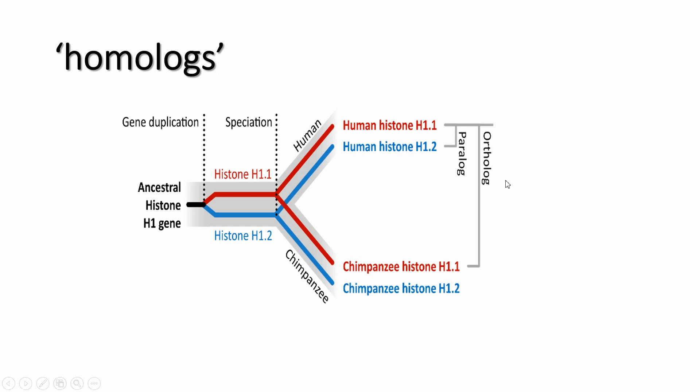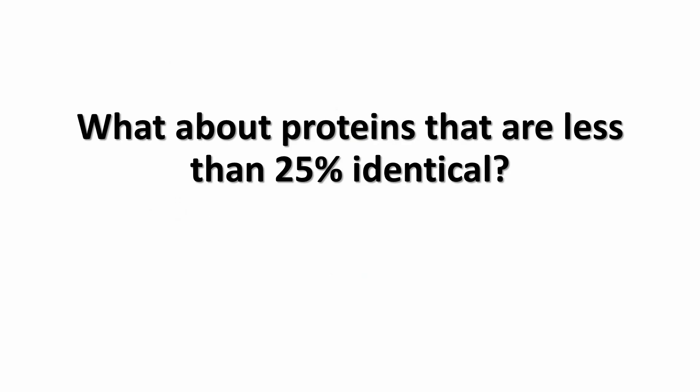What about proteins that are less than 25 percent identical? They could still be homologous but we are not sure. We need to look at other kinds of evidence, like: check if they have similar structure, if they perform similar biological roles, check the expectation value or E-value which tells you how likely it is that sequence similarity is a result of a chance event, length of sequence alignment which should be at least 100 residues, and pattern of amino acid conservation.